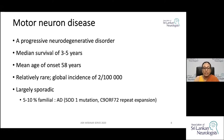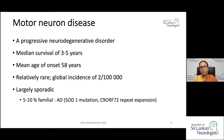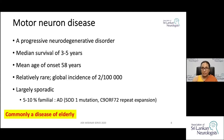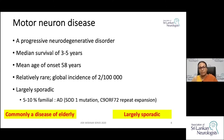This is largely a sporadic disease, with familial cases accounting for around 5 to 10%. In those familial cases, the inheritance is commonly autosomal dominant. It is important to remember that this is largely sporadic, because family members may ask about inheritance risk.